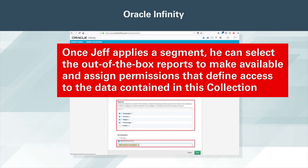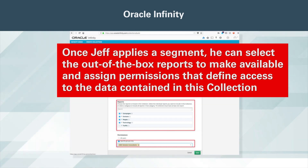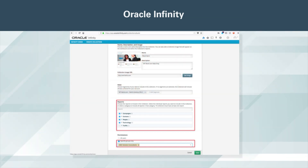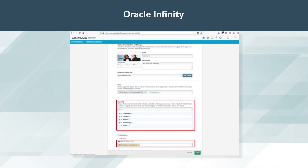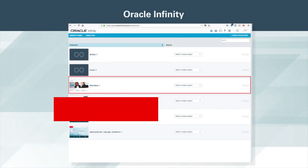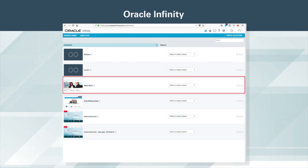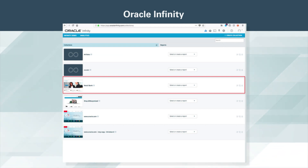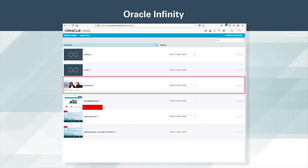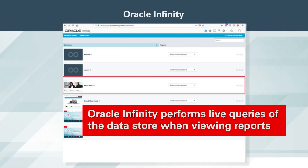Once Jeff applies the segment, he can select the out-of-the-box reports to make available and assign permissions that define access to the data contained in this collection. In this case, Jeff has chosen all of the available out-of-the-box reports, with the exception of some traffic-related reports, and assigned view permissions to the OMC Solutions Consultants Group. Jeff's new Retail Bank Only collection appears in the list and is visible to administrators and members of the OMC Solutions Consulting Group. A newly created collection will be able to show the entire history of collected and retained data, typically up to 25 rolling months, unless longer data retention has been specified contractually, not just new data from the point of creation, because Oracle Infinity performs live queries of the data store when viewing reports.